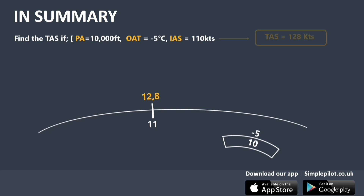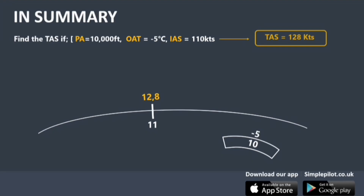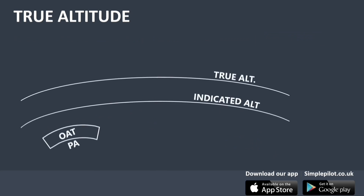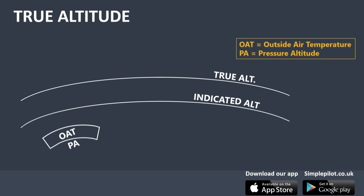Let's continue with the true altitude. As with the previous problem, the interior windows should be used in conjunction with the main scales. The true altitude is represented on the outer scale, the indicated altitude on the middle scale, and the pressure altitude and outside air temperature on the inner left window. To calculate the true altitude, align the pressure altitude with the current temperature, then look for the true altitude corresponding to the current indicated altitude.